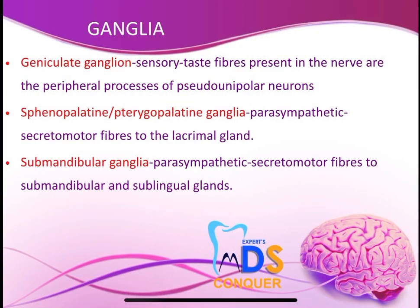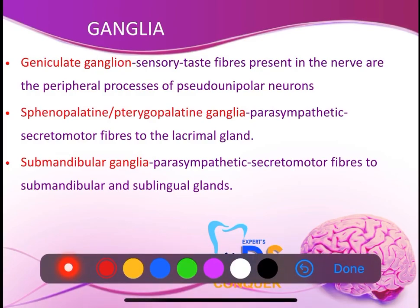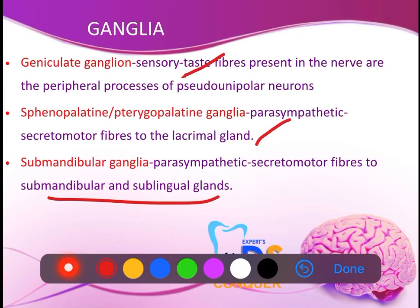Coming to the ganglia — we have already given the introduction, development, and nuclei with related ganglia. So add one more heading: the ganglia. Three ganglia are related to the facial nerve. Give a brief description of each: the geniculate ganglion for sensory taste fibers; the sphenopalatine/pterygopalatine ganglion for lacrimal and nasal glands; and the submandibular ganglion for the submandibular and sublingual glands. The parasympathetic secretomotor fibers go to these glands.